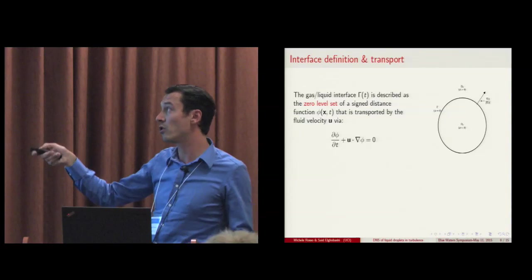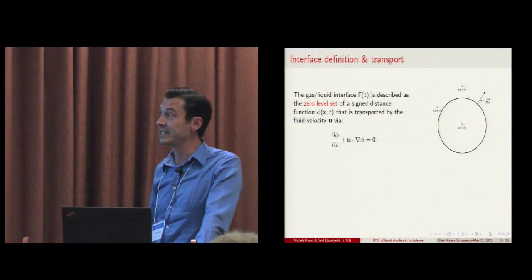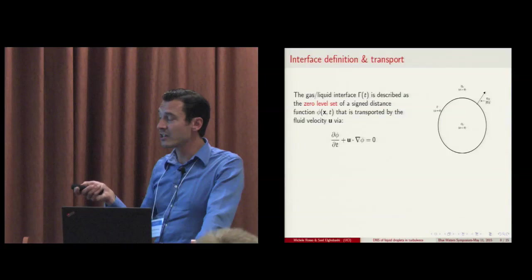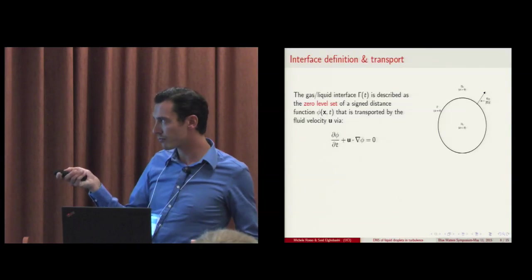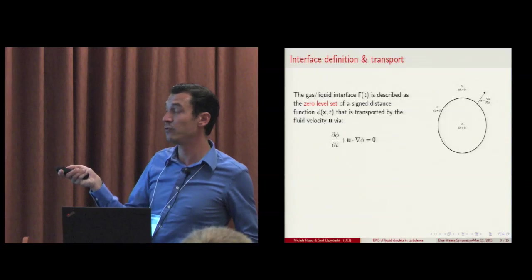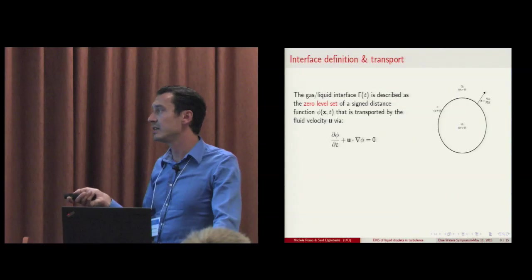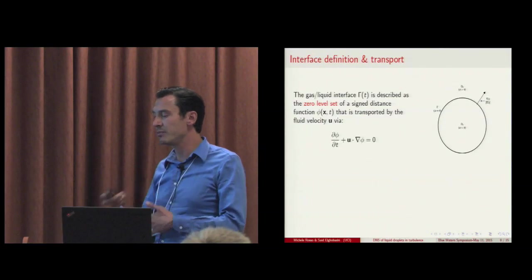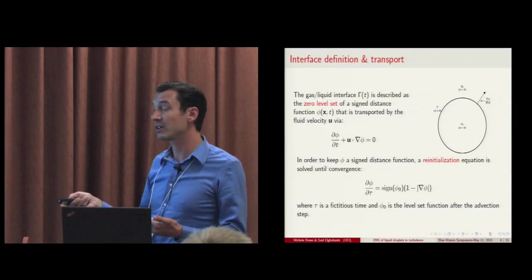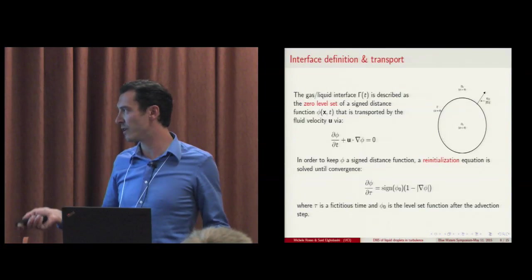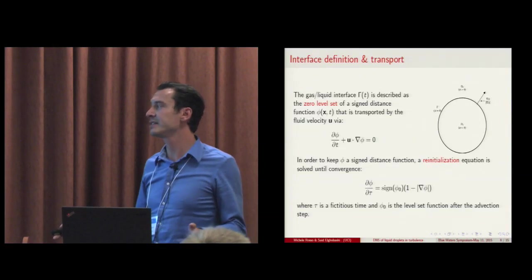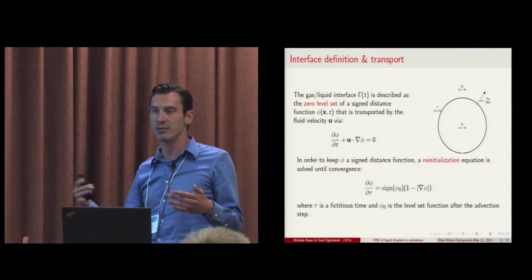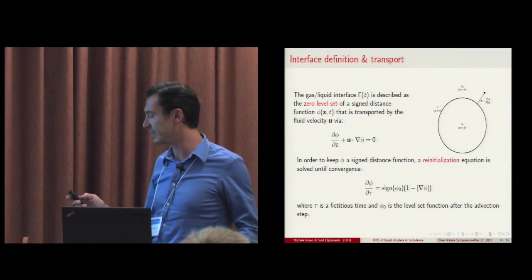This phi function is advected by means of a standard advection equation, where u is the fluid velocity. But in order to keep phi a distance function throughout the whole simulation, we also need to solve a reinitialization equation until convergence is reached. This guarantees phi to be smooth and well-behaved for all the simulation.